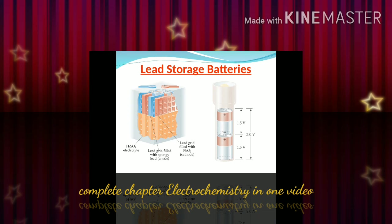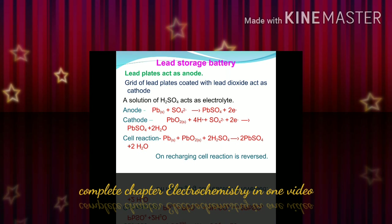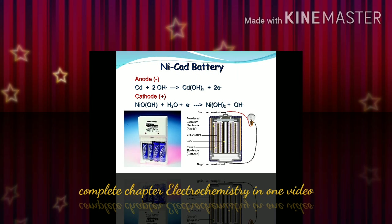Normally in our homes we have inverter batteries, which get discharged to give electricity to the home, and when electricity comes back they get recharged. The anode and cathode are made up of lead oxide and lead, and the electrolyte used is dilute H₂SO₄. The reactions that take place at the anode and cathode are shown. This is about the nickel-cadmium battery.